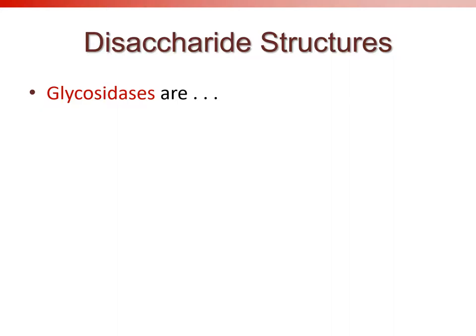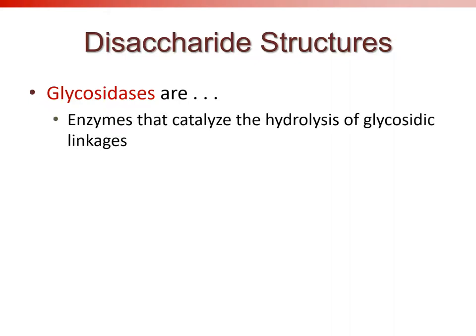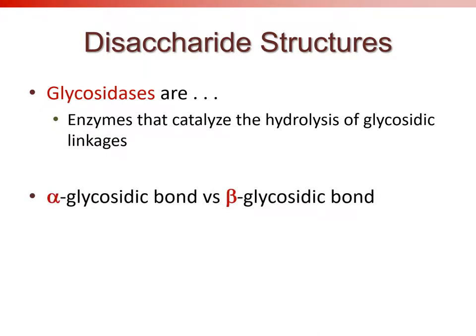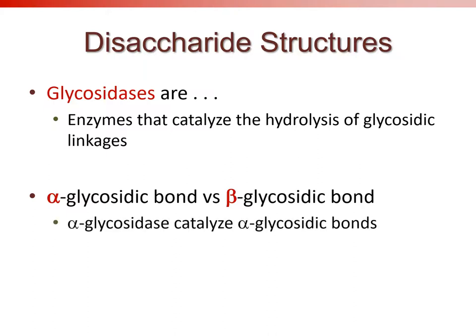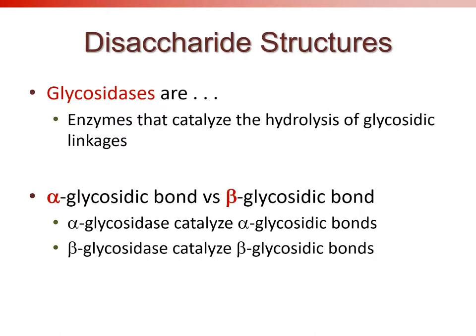To break glycosidic linkages, specific enzymes called glycosidases catalyze the hydrolysis. Crucially, alpha-glycosidic bonds require an alpha-glycosidase, and beta-glycosidic bonds require a beta-glycosidase — the type of enzyme must match the configuration of the linkage.